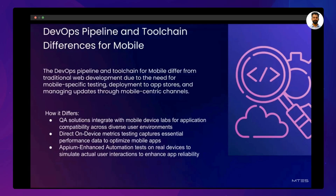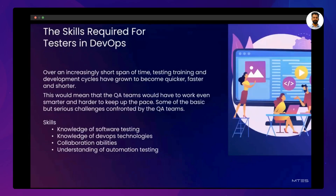Now moving to the skills required for testers in DevOps. Some important skills include: understanding software testing to enable you to spot and resolve software problems quickly; knowledge of DevOps technologies to organize and automate software deployment and testing processes; collaboration abilities with developers and other team members; understanding how to automate testing and deploy code updates regularly; and knowing how the CI/CD pipeline works effectively. These are some of the major skills required for QA to work with DevOps.